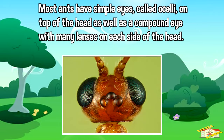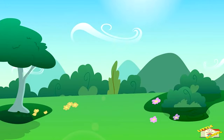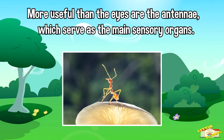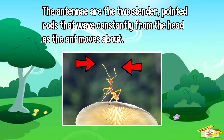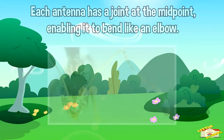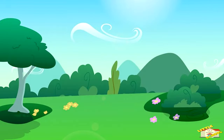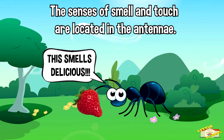Most ants have simple eyes called ocelli on top of the head, as well as a compound eye with many lenses on each side of the head. More useful than the eyes are the antennae, which serve as the main sensory organs. The antennae are the two slender pointed rods that wave constantly from the head as the ant moves about. Each antenna has a joint at the midpoint, enabling it to bend like an elbow.